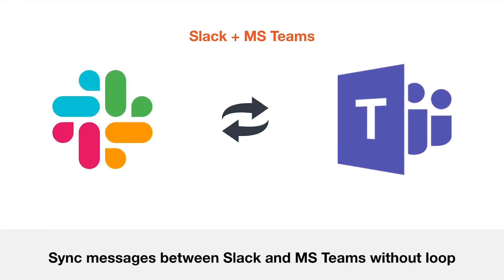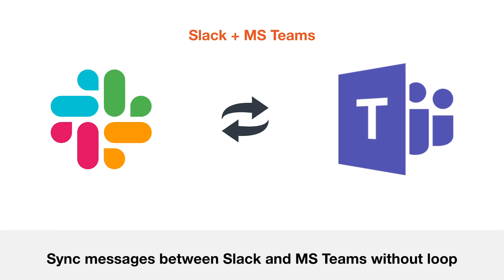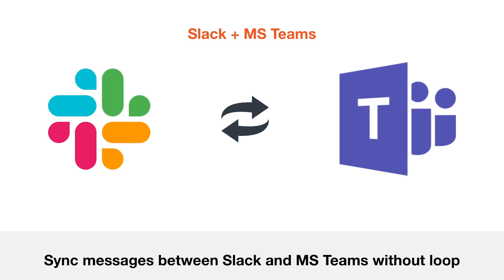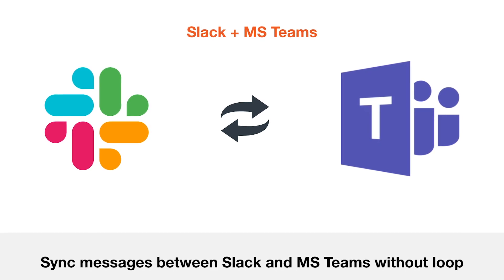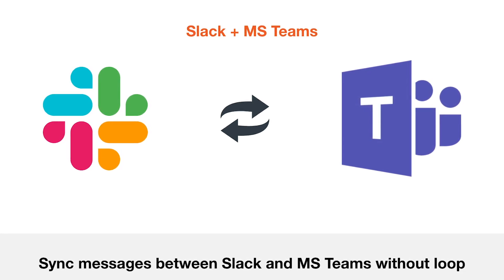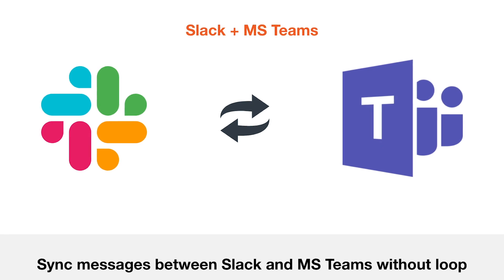Connect can get stuck in a loop when they run over and over again from a single trigger event. Connect loops can occur if you send messages from Slack to MS Teams and vice versa, as the action is identical to the event it is triggered from.